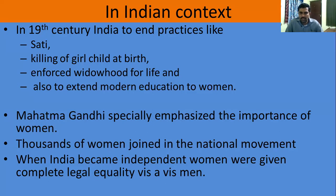Now we will discuss the Indian context. Up to the 19th century, India needed to end harmful practices like the sati practice, the killing of girl children at birth, and enforced widowhood for life. These were superstitious beliefs. In many families, girl children were killed at birth because of the preference for male children. These three types of superstitious practices continued until the 19th century.